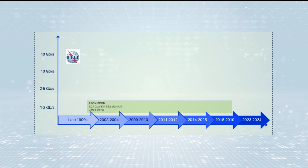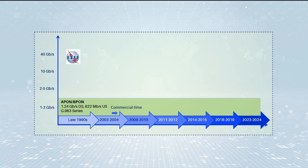In 1997, ITU-T launched the APON technology, which is the G983.1 standard. APON stands for ATM Passive Optical Networks, which uses asynchronous transfer mode for data communication. In 2001, ITU upgraded and revised APON to BPON, Broadband PON. BPON is based on the ATM protocol and adopts WDM for downstream transmission.